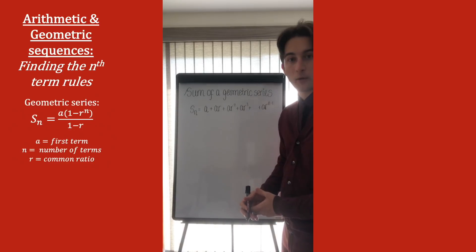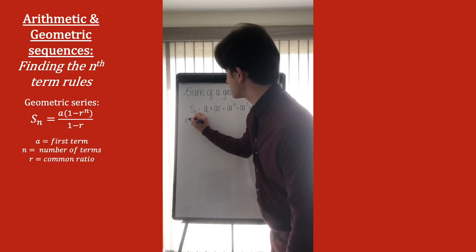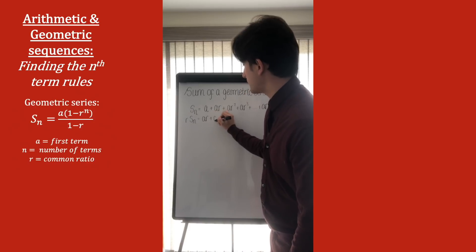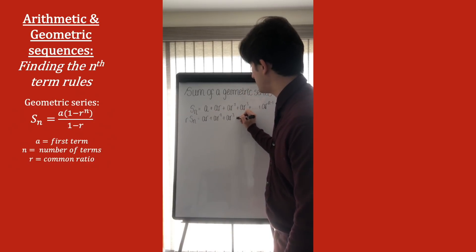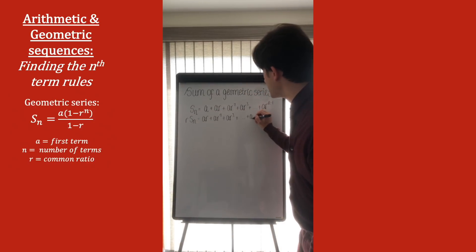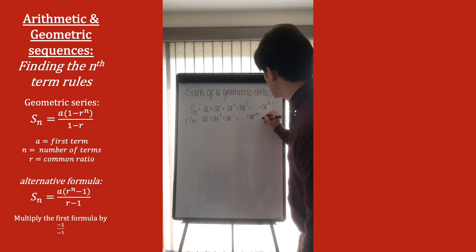Now, for this case, what we do is we write the sum out, multiplied through by r this time, and we get r lots of the sum, is equal to ar, plus ar squared, plus ar cubed, plus, and now the second last term will be ar to the n minus 1, and the final term will be ar to the n.